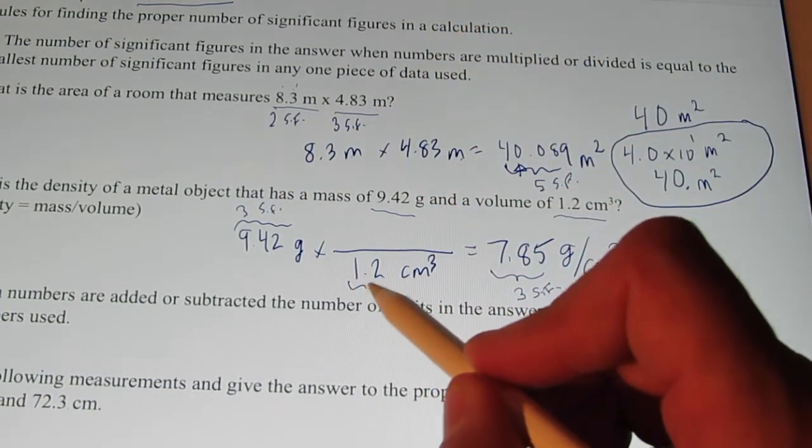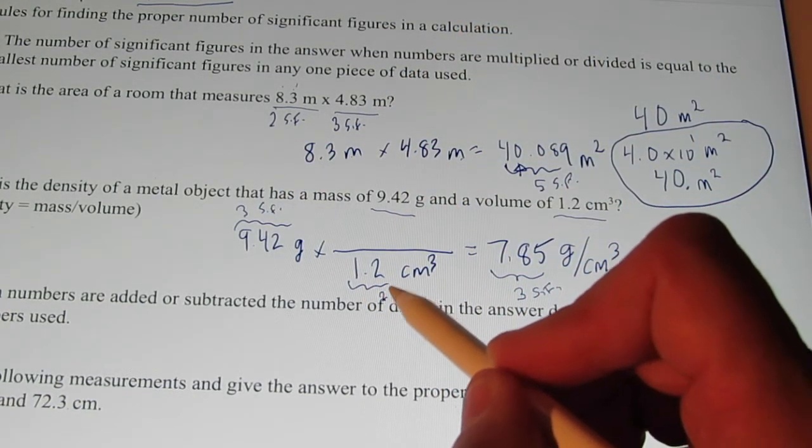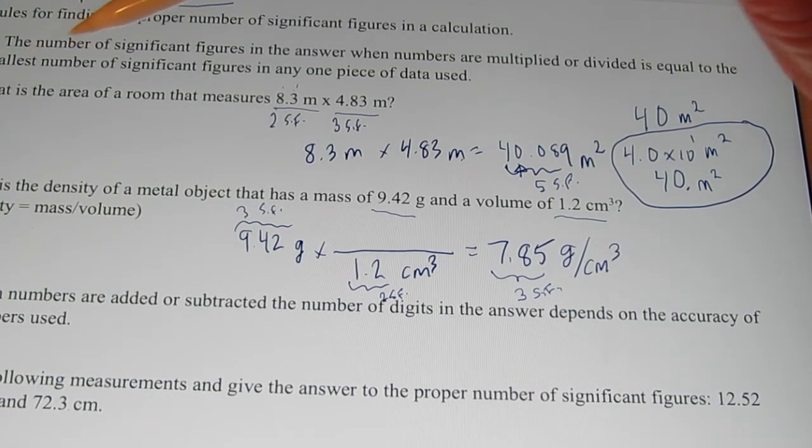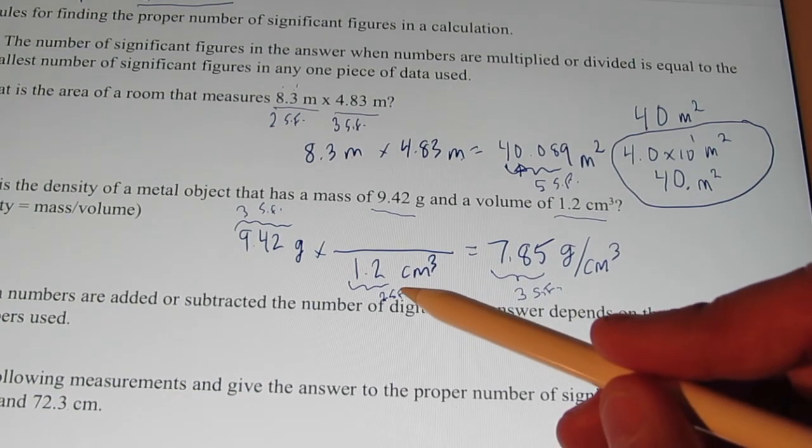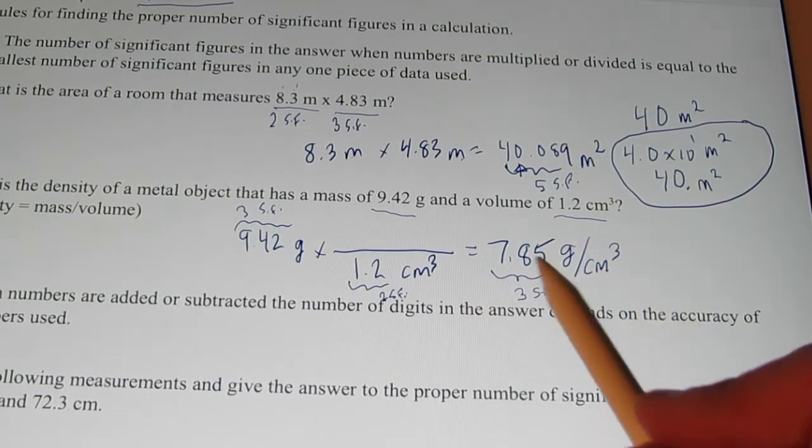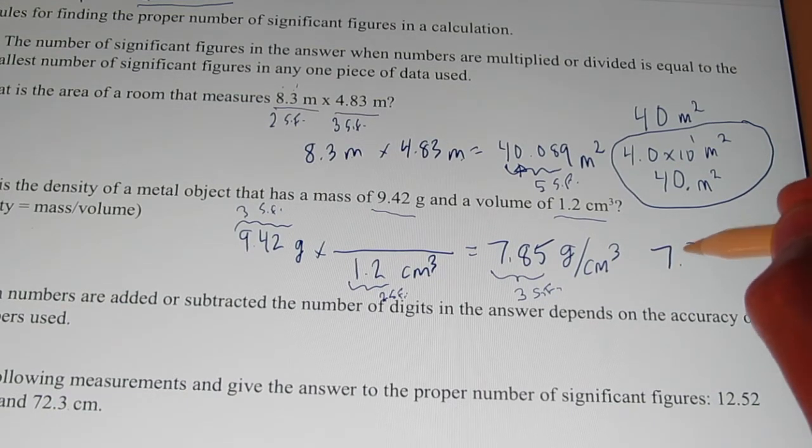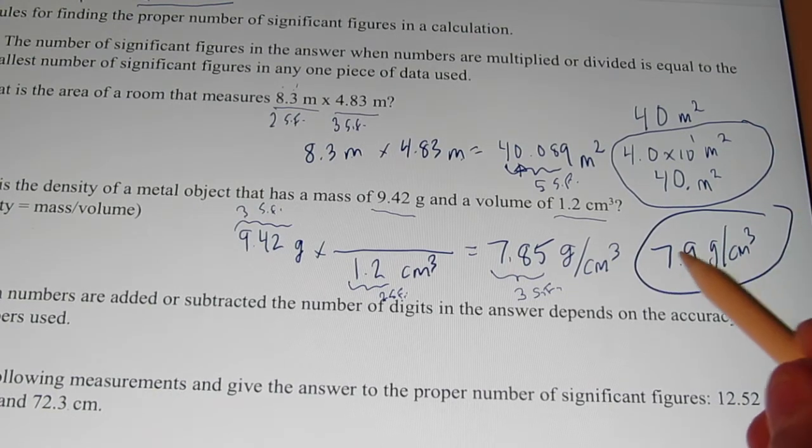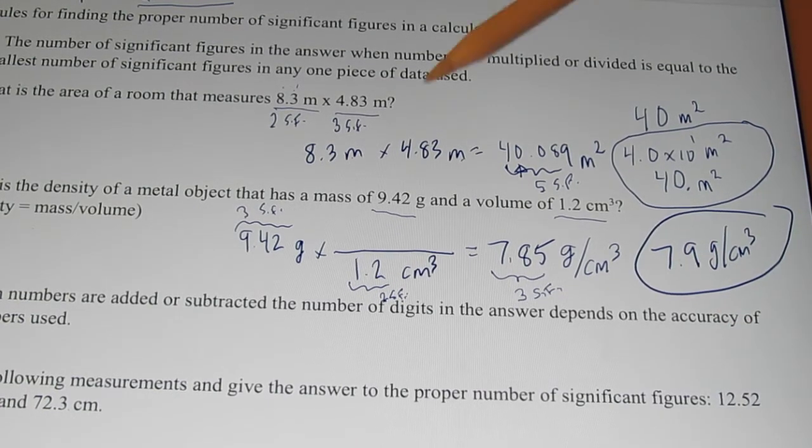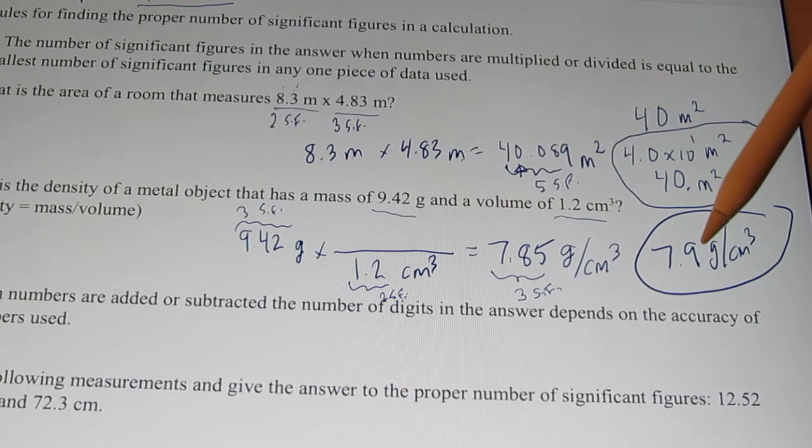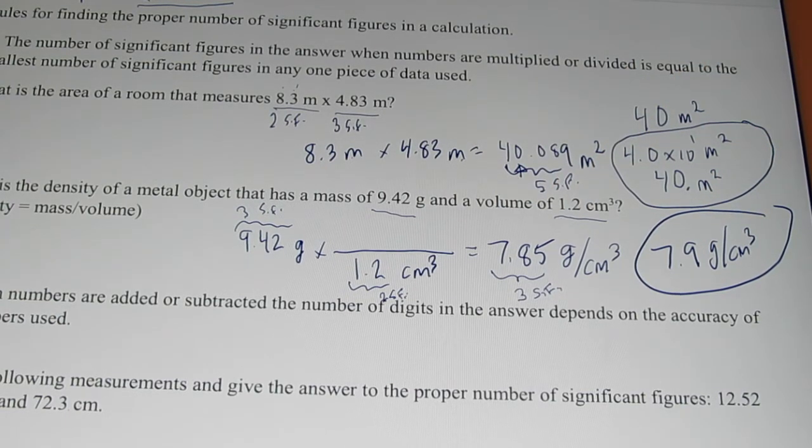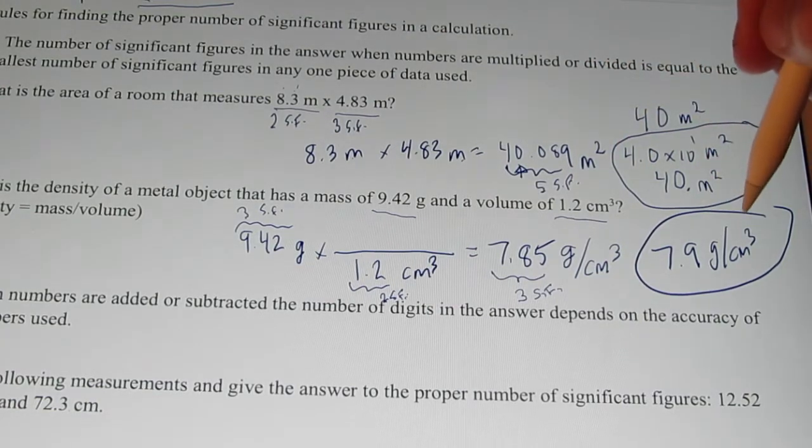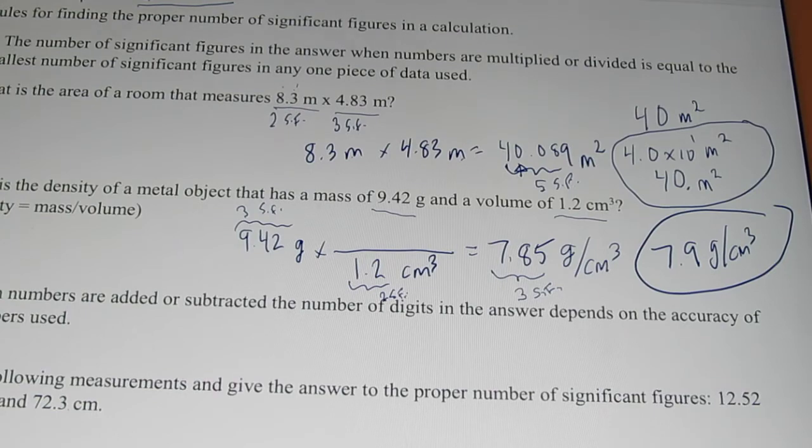My second piece of data, 1.2, only has two significant figures in it. So, I have to go with a piece of data that has the smallest number of significant figures. So, I have to round my answer off to two sig figs. So, 7.85 becomes 7.9 grams per cubic centimeter. Two sig figs in my answer. My data with the least number of sig figs had two sig figs in it. Okay? Now, we're going to practice a bunch of these in class. So, you'll get a chance to ask questions in class tomorrow. Alrighty?